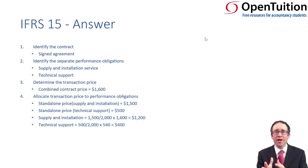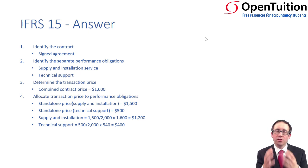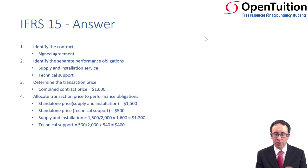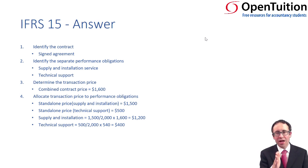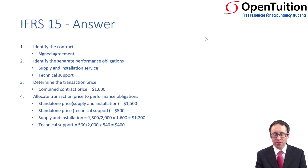For the supply and installation, $1,500 out of the total standalone price of $2,000 gets allocated to the transaction price of $1,600 — that's three quarters, which is $1,200. For the technical support, its standalone price is $500 out of the total $2,000, which gets allocated to $400.